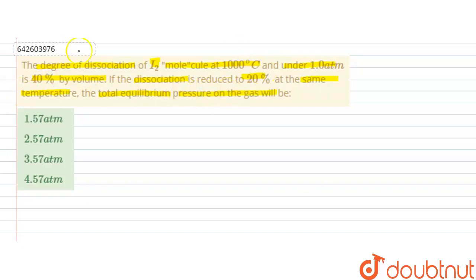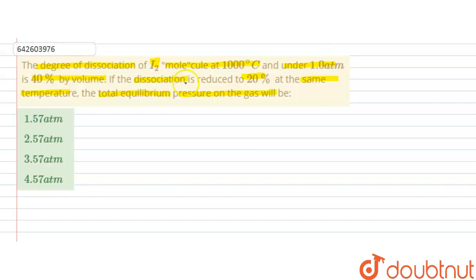In this question, it is given that the degree of dissociation of I₂ at 1000°C and one atmosphere is 40% by volume. If the dissociation is reduced to 20% at the same temperature, we have to find the new equilibrium pressure. The initial pressure is one atmosphere.